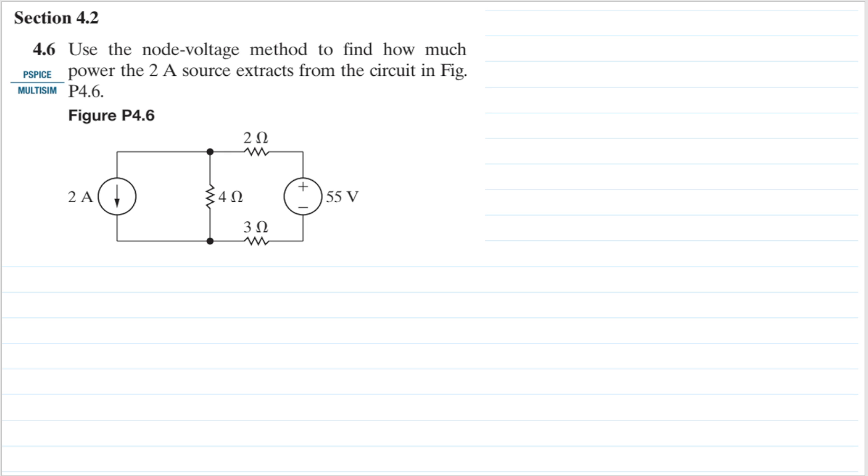I think I want to simplify the circuit first because this 2 ohm and 3 ohm resistor here is in series, so we can merge them into a 5 ohm resistor.